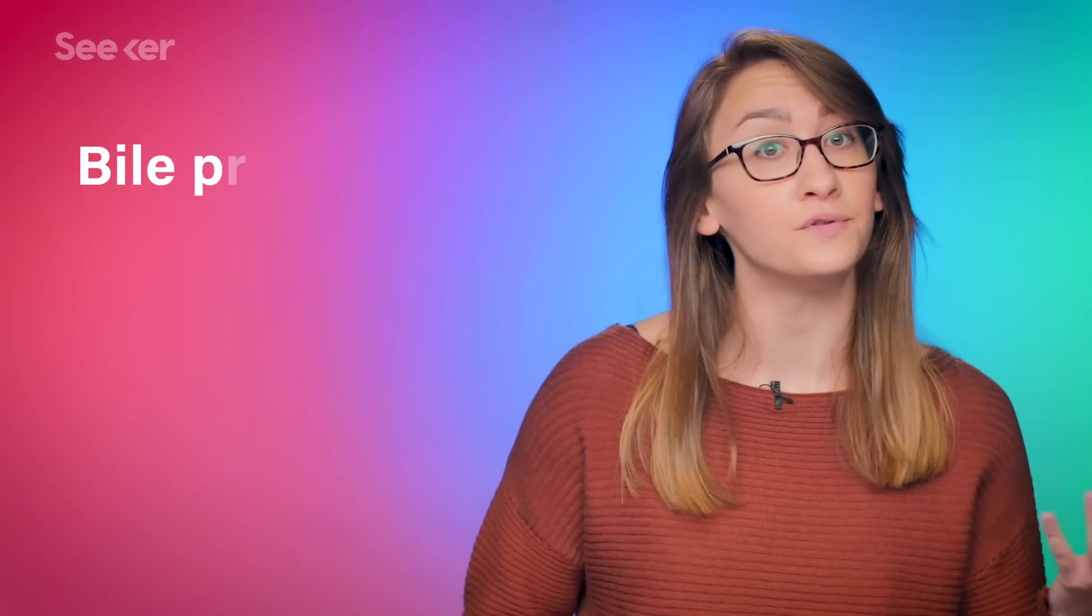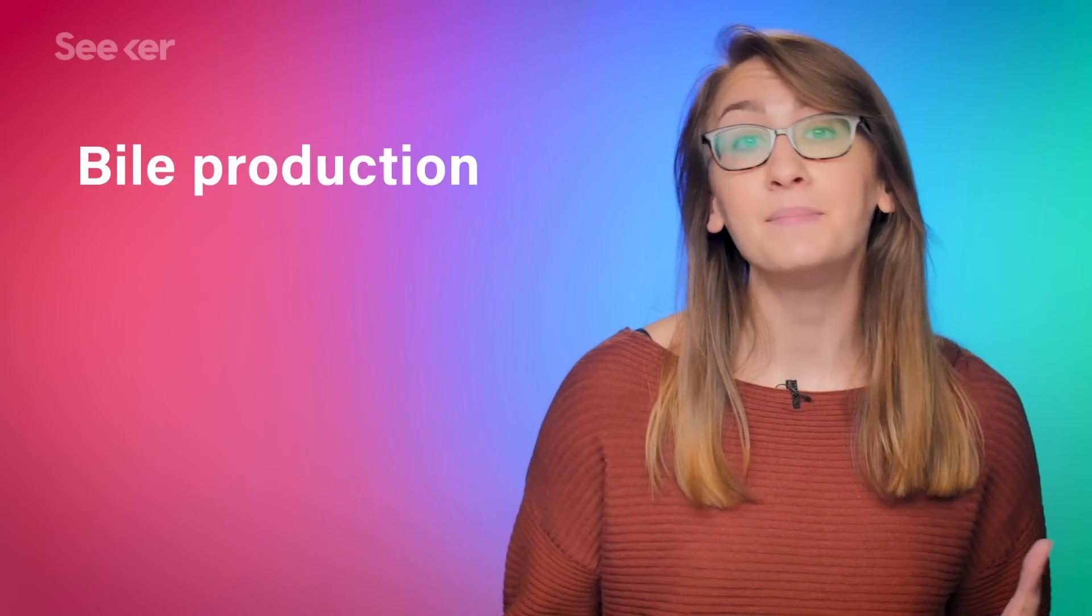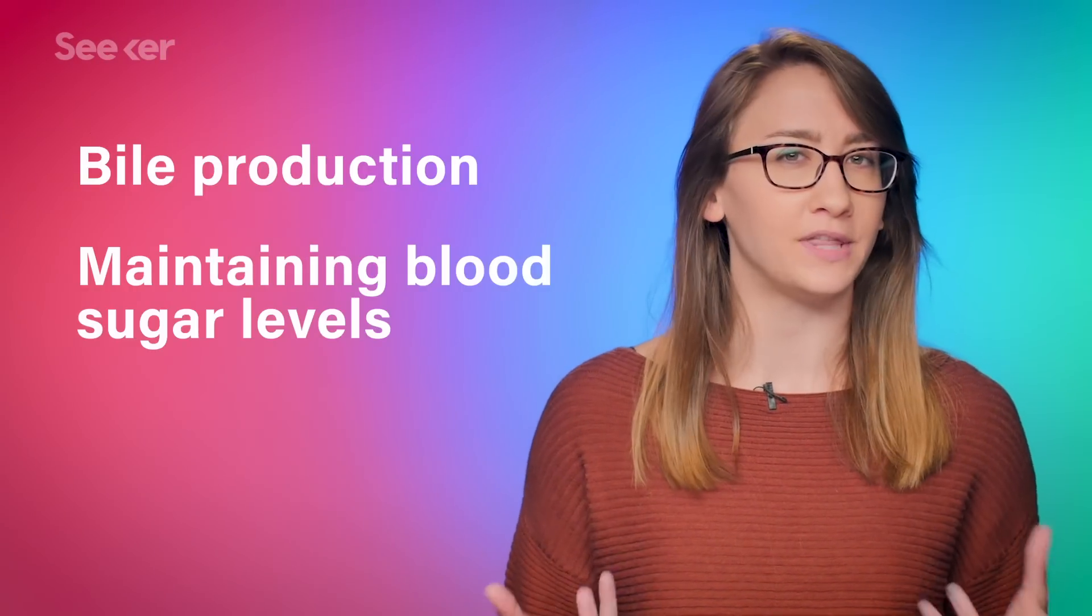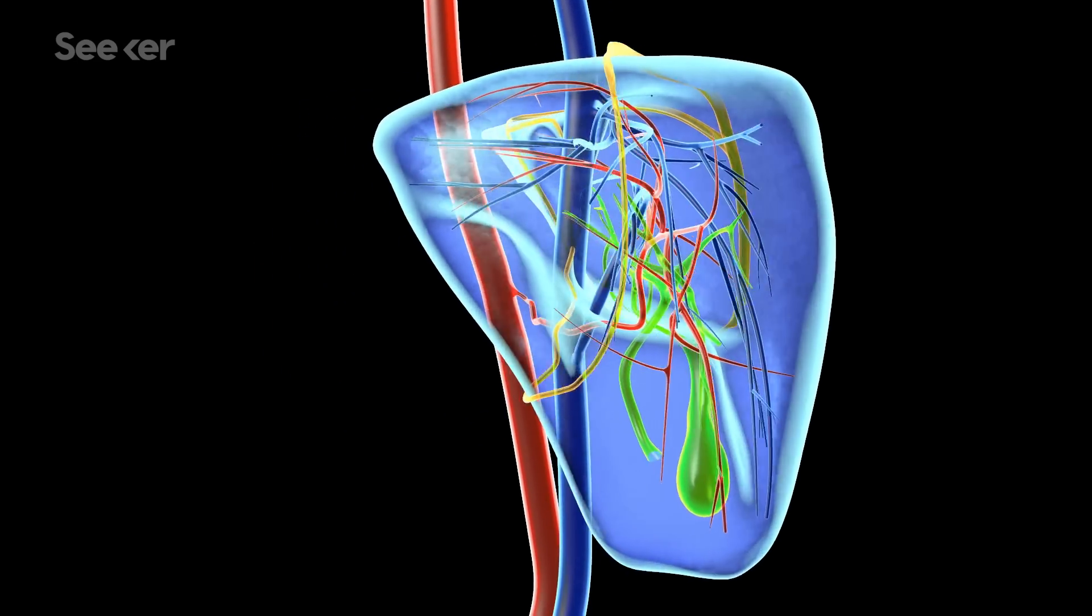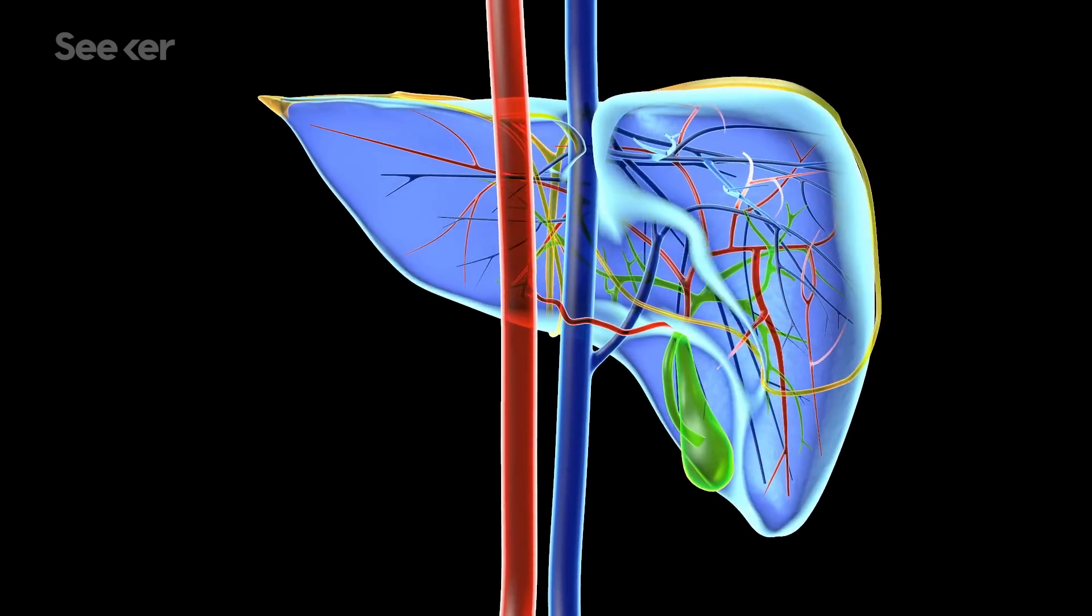Take the liver, for example. It has over 500 functions, like producing bile for digestion and maintaining the right amounts of blood sugar within the body. All these functions depend on the intricate network of vessels to get their necessary nutrients.